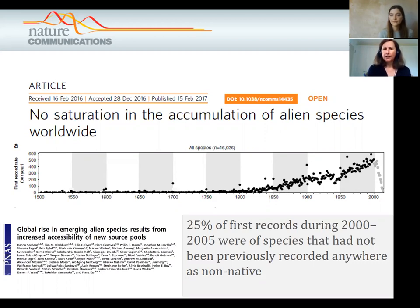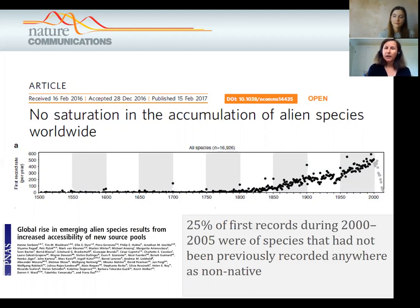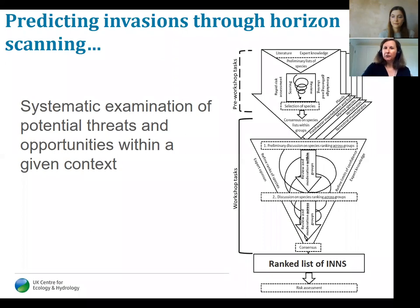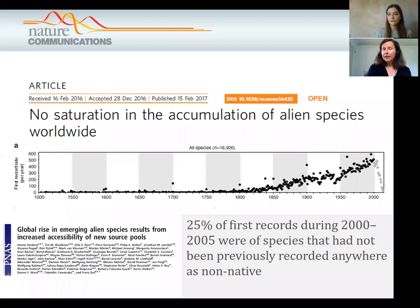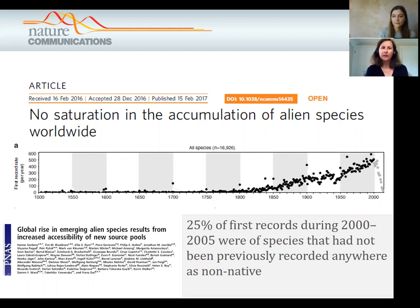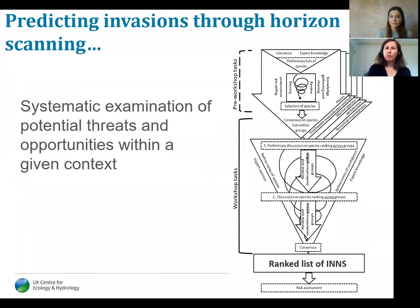One really concerning aspect is that when you look at first records of species arriving somewhere new in the world, quite a high proportion — from 2000 to 2005, 25% of those first records had no previous invasion history. For managing biological invasions, prevention is really the best approach. But in order to put in place preventative measures, we need to get better at predicting what these species are and how they are arriving. That leads me to talk about horizon scanning.